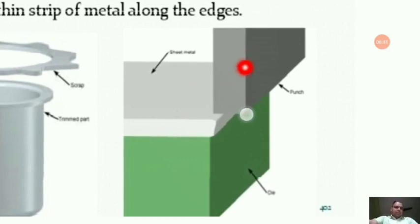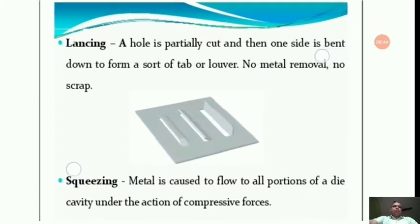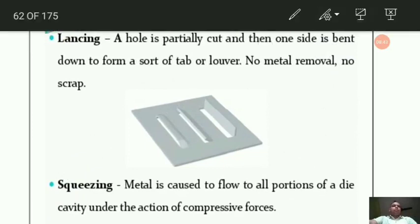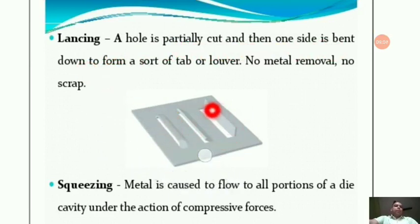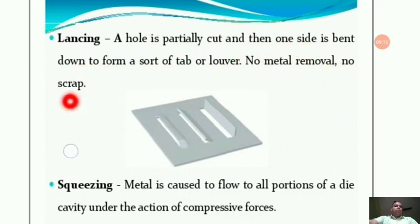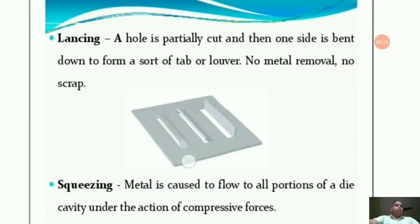This is the die, this is the sheet metal, and this is the punch. Next is lancing — a very important operation for MCQ purposes. Lancing is when a hole is partially cut and then one side is bent down to form a sort of tab or louvre. There is no metal removal and no scrap in lancing.